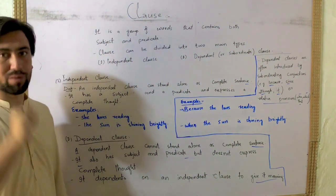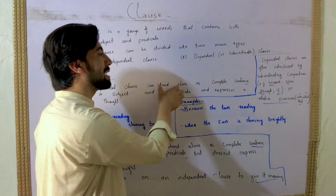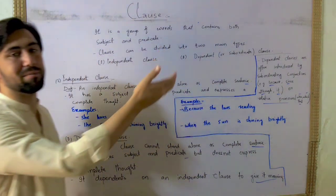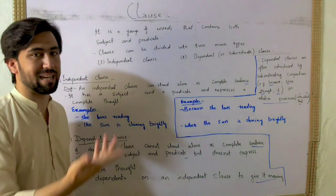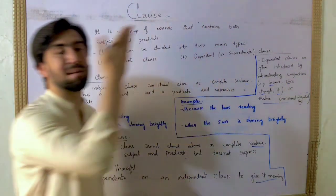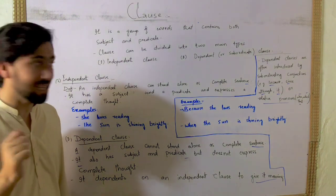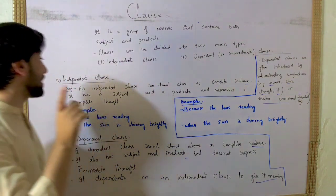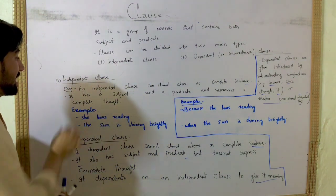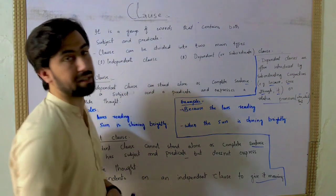If you have a complete sentence, you have an independent clause. But if it is a complete sentence, it is an independent clause. Clear? Two types of clause have a subject and predicate.